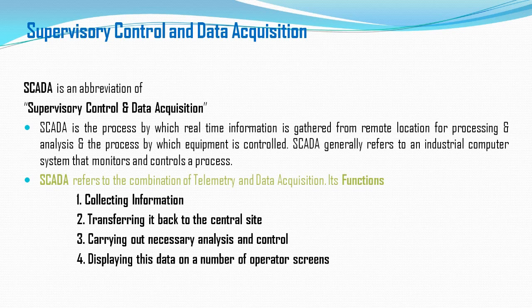SCADA is a process by which you get real-time information from remote locations, which may be in power plants, chemical industries, or oil and gas sectors. You gather that information from these locations, analyze it using the SCADA system, and then control the processes. SCADA is essentially an industrial computer that monitors and controls processes. It is a combination of telemetry and data acquisition systems, and we will explain what those are in upcoming slides.